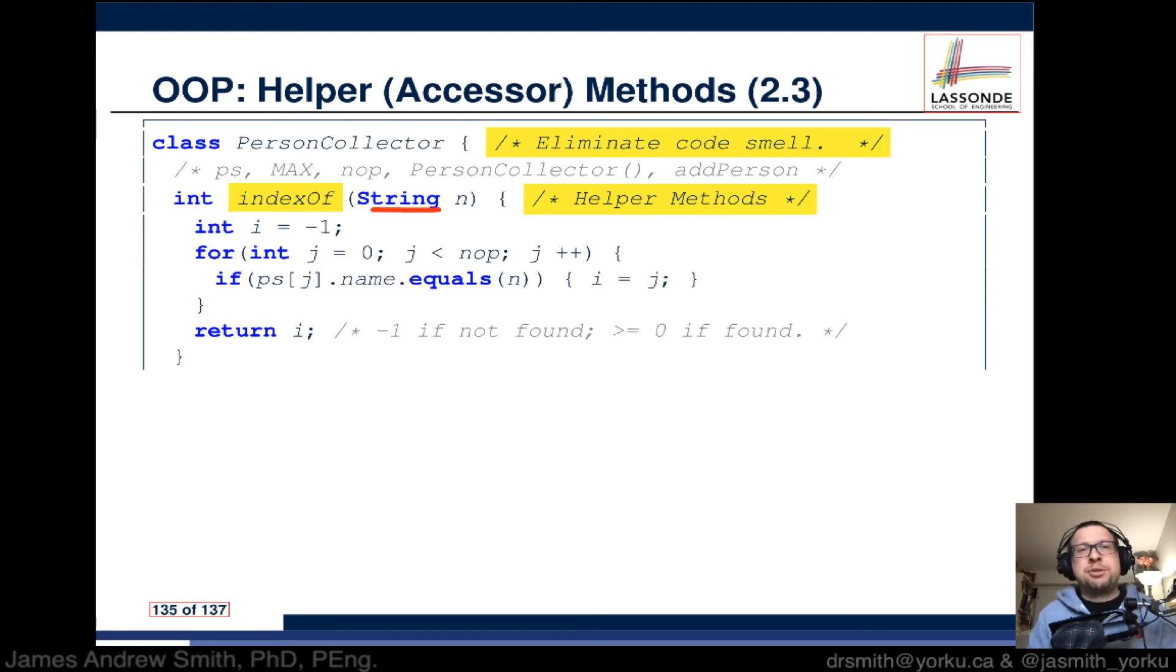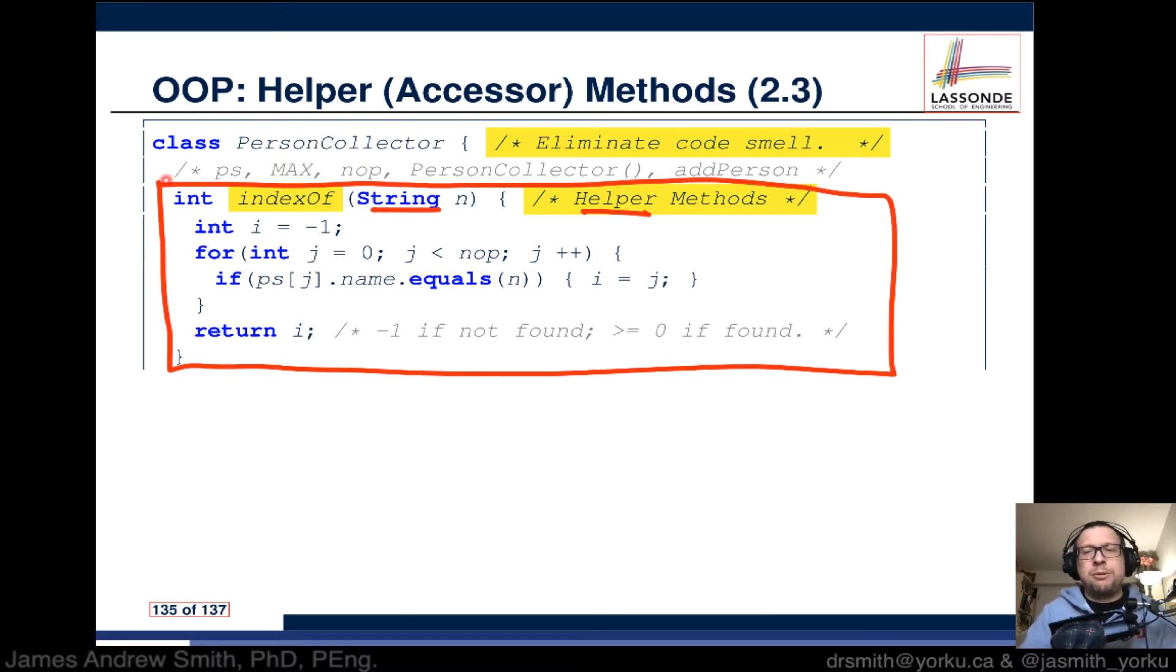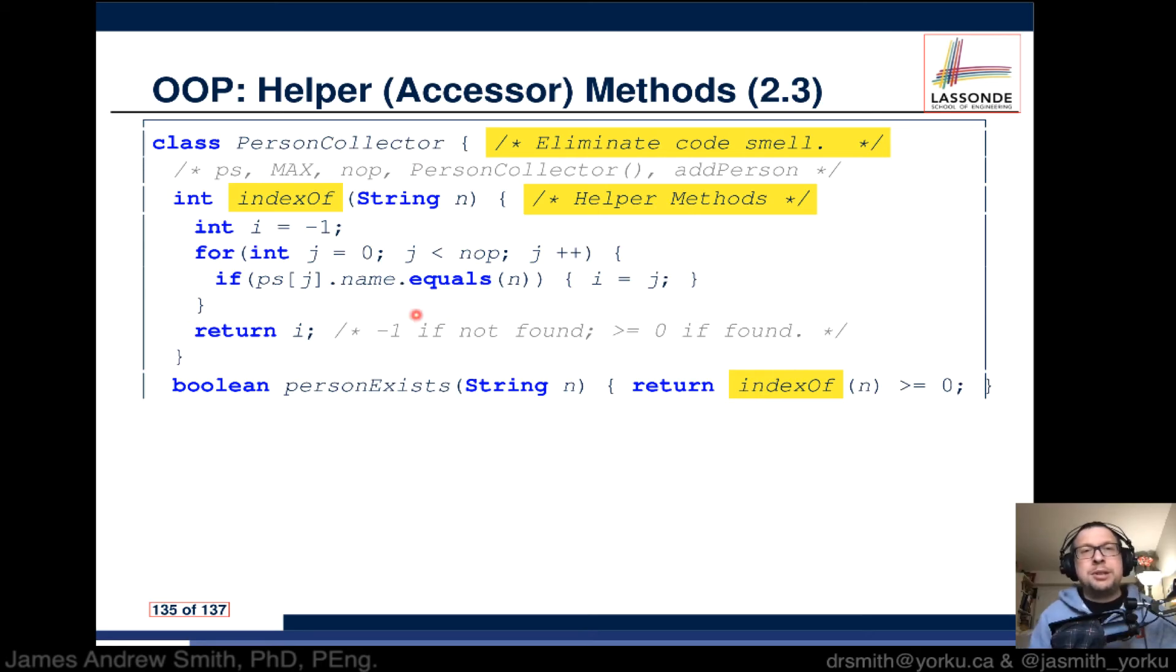This is going to help us out, it's a helper method. You can see a lot of the same sort of fragments that you saw before, it's just all in here, all sort of compartmentalized into this little block that we just call over and over again. When we want to do person exists, instead of all that code that we had before, we replace it with indexOf.